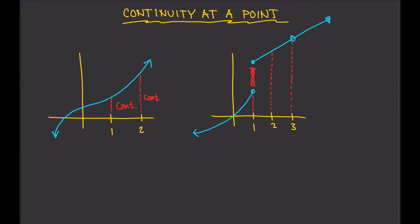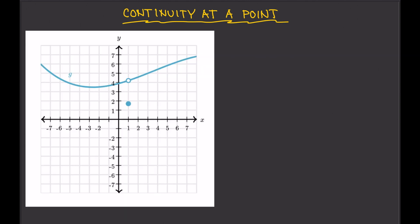Now let me show you some examples of actual graphs. For this example, is the function continuous at x equals 1? Let's look at the graph and examine at x equals 1. There's a hole right here. This is not continuous — so, not continuous at x equals 1. How about at x equals 2? We can move over to x equals 2 and see that there's nothing wrong there, no weird stuff going on. So we can say that this is continuous at x equals 2. The function is continuous at all other points except at x equals 1.